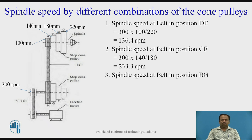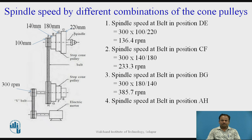Third speed: spindle speed at belt in position BG, where the input diameter is 180 mm and output diameter is 140 mm. Therefore 300 × 180 / 140 gives us 385.7 rpm. Fourth speed: spindle speed at belt in position AH, where the input diameter is 220 mm and output diameter is 100 mm. Therefore 300 × 220 / 100 gives us 660 rpm. These are the four speeds obtained by different combinations of cone pulleys.